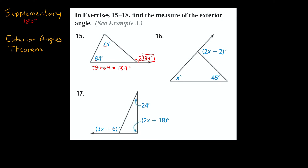This method only works if the two angles given are not next to — not supplementary with — the exterior angle you're trying to find. For example, if the 64 degrees was placed right next to the exterior angle instead, we couldn't use the exterior angles theorem because that given angle would be adjacent to the one we're solving for. In that case, you'd have to use the supplementary angles method. But for the remaining examples, we'll use the exterior angles theorem.